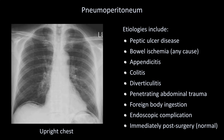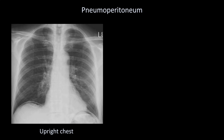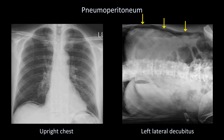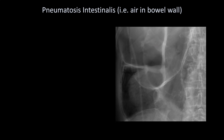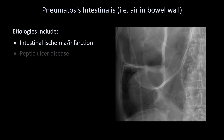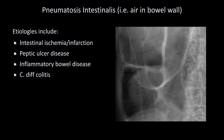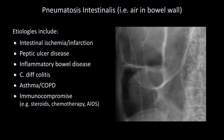After surgery, air usually remains visible for two to three days on average, with almost all post-surgical patients having resolution within seven days. In patients unable to stand upright, pneumoperitoneum can be evaluated with a left lateral decubitus film where the gas will collect between the intra-abdominal contents and the abdominal wall. The other significant extraluminal gas abnormality is more subtle: pneumatosis intestinalis — air within the bowel wall itself — which can affect either the large or small bowel. Etiologies include intestinal ischemia and infarction, peptic ulcer disease, inflammatory bowel disease, C. diff colitis, asthma and COPD, significant immunocompromise including steroid use, chemotherapy, and AIDS, mechanical ventilation, and as a complication from endoscopy.